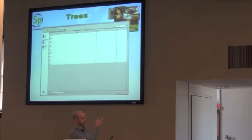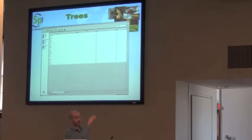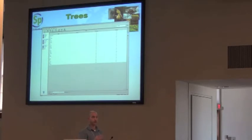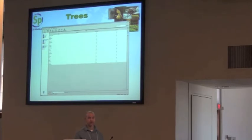Each one of these trees is driven by a definition file, which indicates which of those levels you want to include in your tree and which ones are enforced — meaning that if a level is enforced, you cannot skip it. So you cannot put a genus in an order, cannot put a species in a family; you have to put a species in a genus, a genus in a family, and so on.